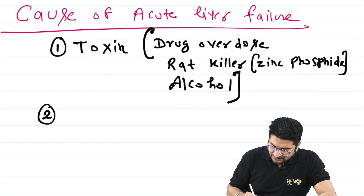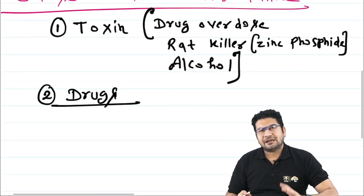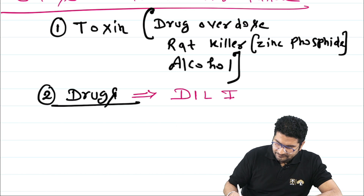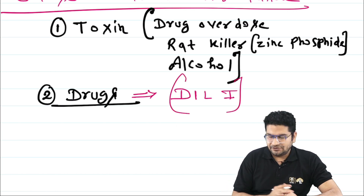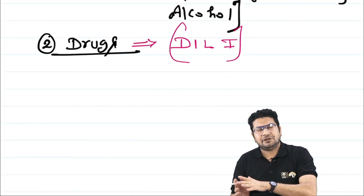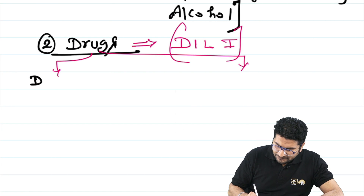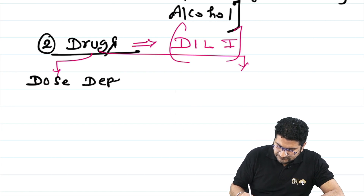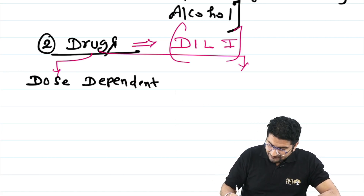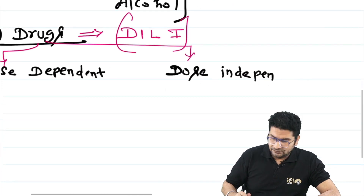Drugs can cause damage to the liver — this is called DILI, drug-induced liver injury. DILI can be of two types: some drugs damage the liver in a dose-dependent fashion, meaning damage only occurs when taken in excess. Other drugs can cause liver failure even in a single dose — these are dose-independent.